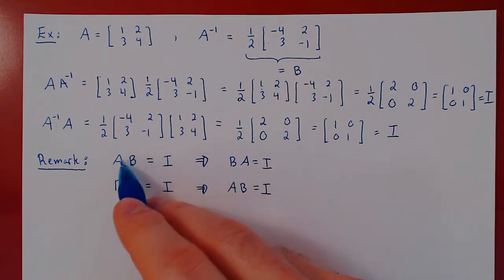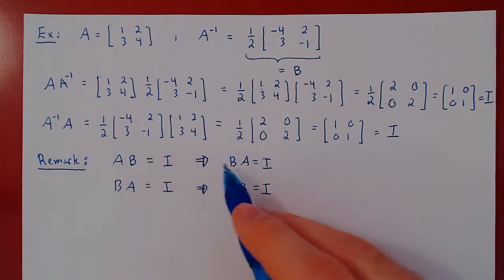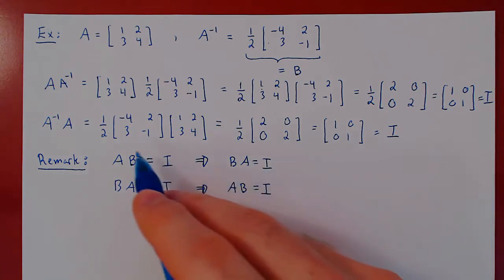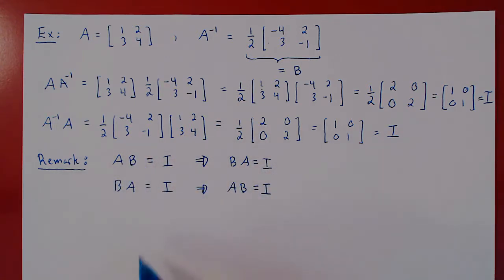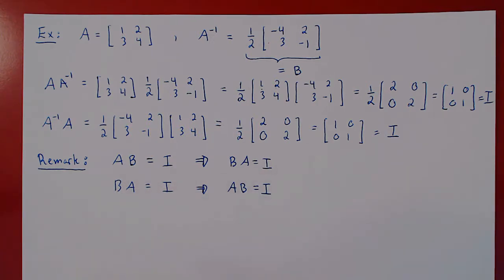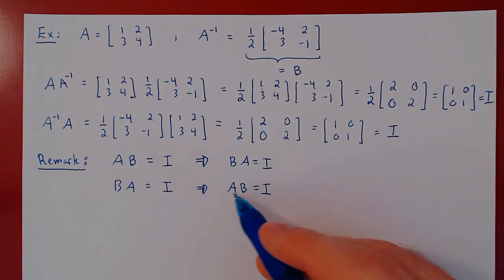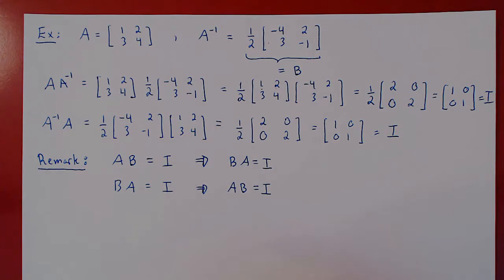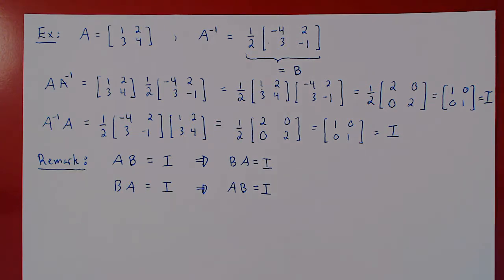If you prove that A times B equals I, automatically B times A equals I, and so B is the inverse of A. If you prove in the other direction that B times A equals I, then automatically A times B will also equal I, which proves that B is the inverse of A. The inverse is unique — there is only one inverse if it does exist. This is something we'll prove later on.